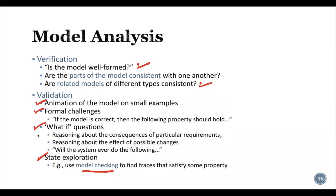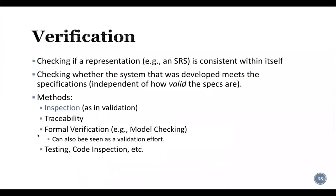In verification, we check if our SRS is consistent with itself, and whether the system developed meets the specification independent of how valid the specification is. Different methods to verify the specification include: inspection (similar to validation), traceability matrix (important to verify requirements and the specification document), formal verification like model checking (also seen as a validation effort), and testing and code inspection.